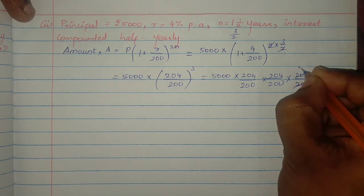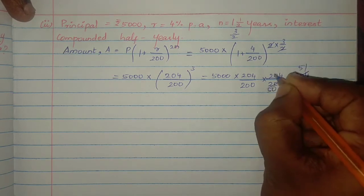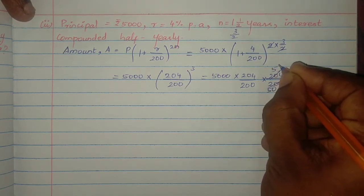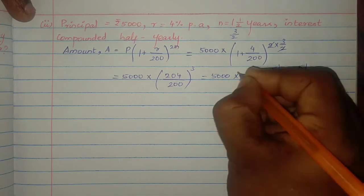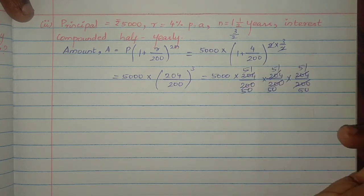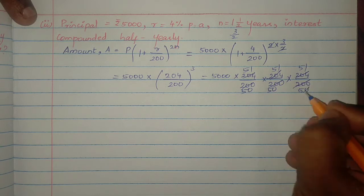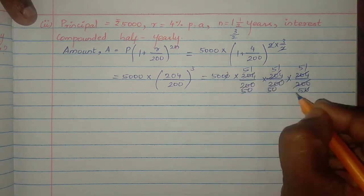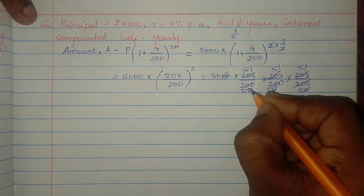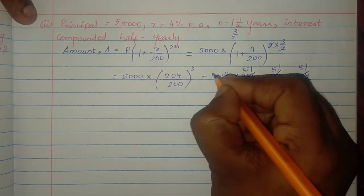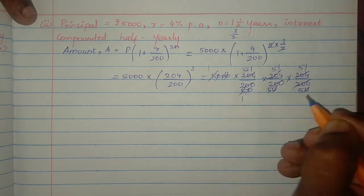Cancelling: 200 goes into 5000 giving 25. Then 5 and 5 cancel. We get 51 × 51 × 51 divided by remaining factors. Simplifying step by step: 51 divided gives 10.2.